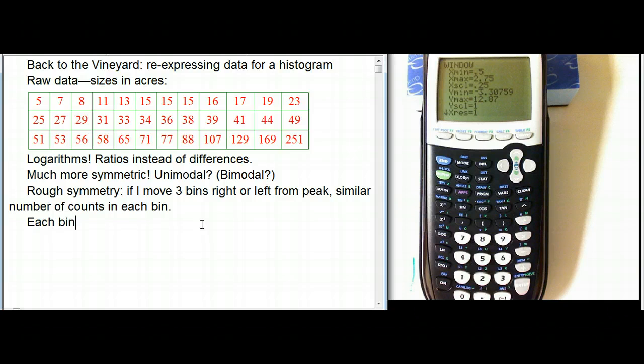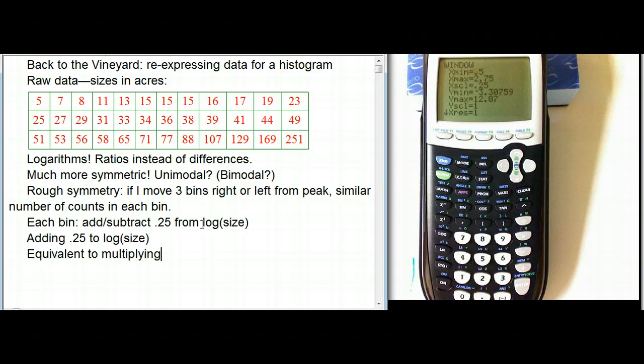each bin is, I add or subtract .25 from the logarithm of the size. So, for example, adding .25 to log of size, fundamental thing about how logs work is if I add a number to the logarithm, that means that's equivalent to multiplying the size by the number 10, let's put it in math mode, 10 to the .25, which I don't need to do by hand, I can calculate that.